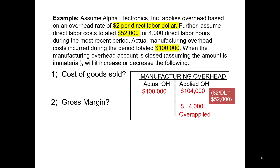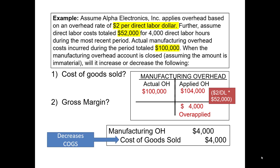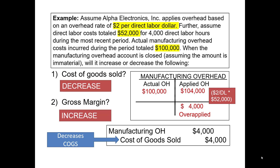To close that out, we will debit the manufacturing overhead account and plug the amount to cost of goods sold. Cost of goods sold is an expense account, and a credit to an expense account decreases the account. So the answer to question one is that cost of goods sold decreases. Since gross margin is sales minus cost of goods sold, and cost of goods sold is now lower, gross margin will increase.